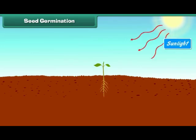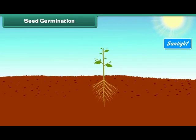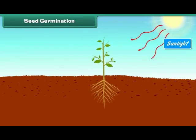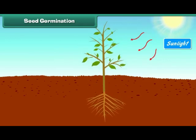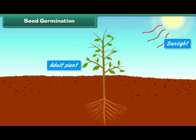After that, the shoot germinates upwards towards sunlight, and then leaves start growing up on the shoot. The young plant is called a seedling, which grows into an adult plant.